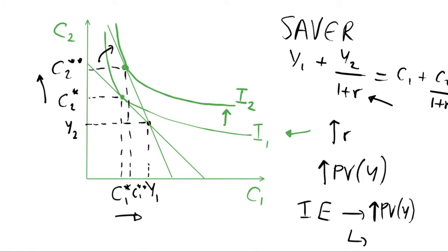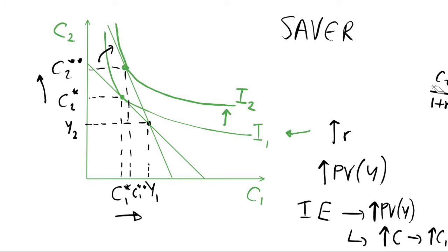This increase in income means that the consumer can increase their consumption, and more specifically it means they can increase both their consumption of c1 and c2, which is why we see both c1 and c2 increasing in the diagram. However, we also have what we call a substitution effect.